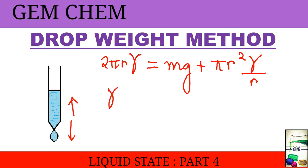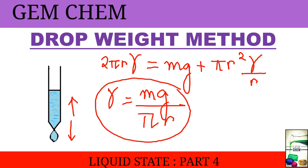So the total downward force is mg plus πr²γ/r. So at equilibrium, these two are equal. So we can write gamma equals to mg/πr from solving this equation. So this is how it can be measured.